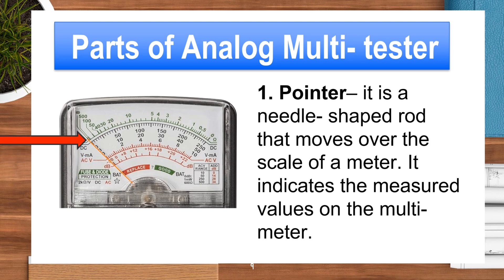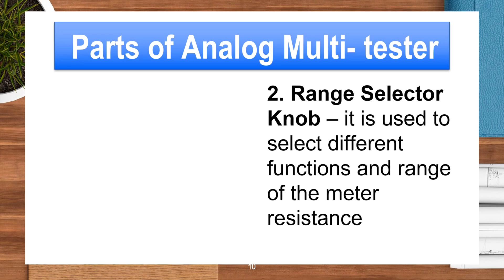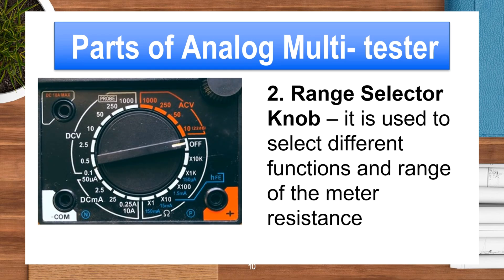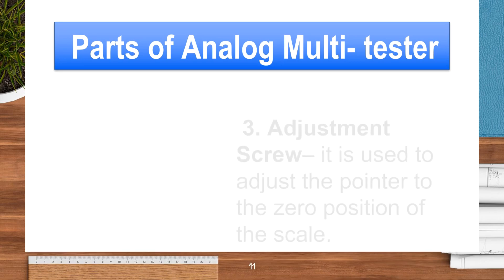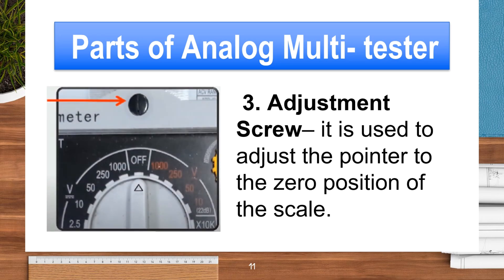It indicates the measured values on the multimeter. Part 3 is the Zero Adjuster. It is used to adjust the pointer to the zero position of the scale.